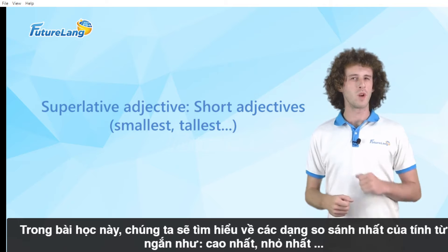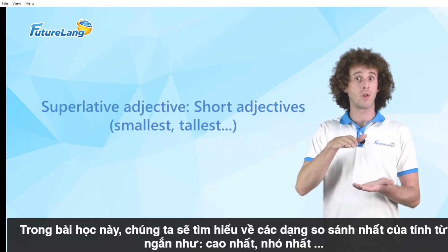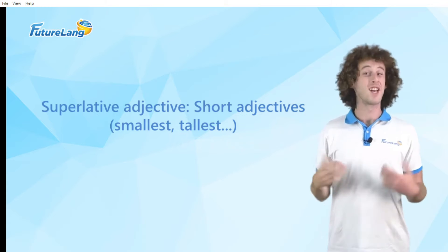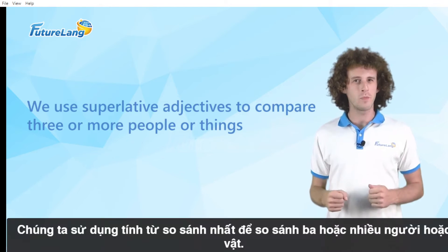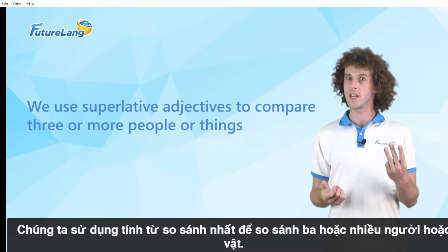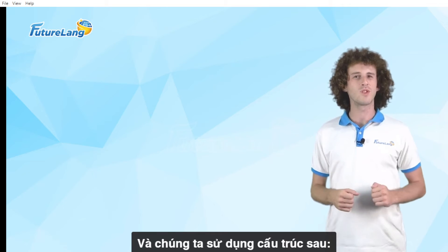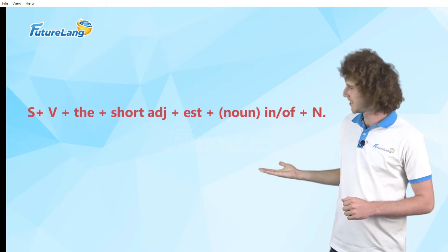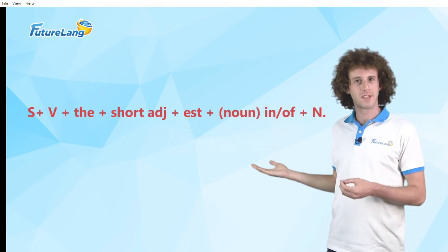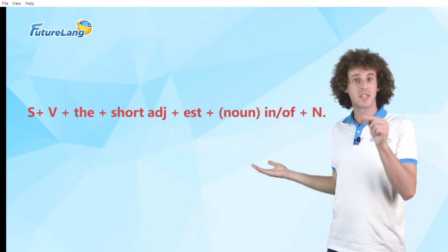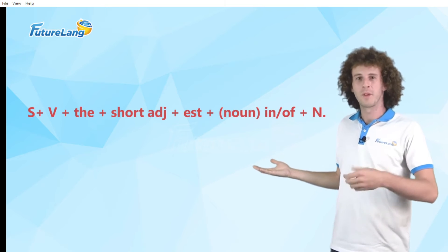In this lesson we will learn about superlative forms of short adjectives such as tall or small. We use superlative adjectives to compare three or more people or things. And we use the following form: subject plus verb plus 'the' plus short adjective plus EST plus noun, in or of plus noun.